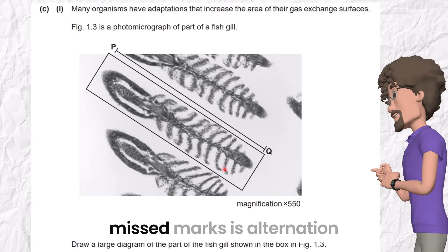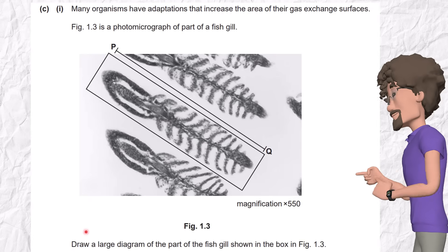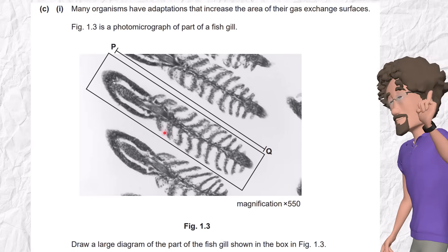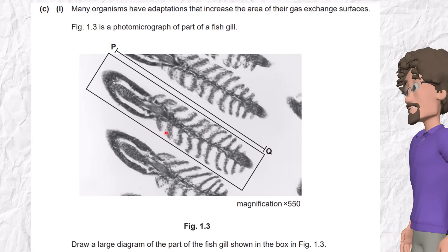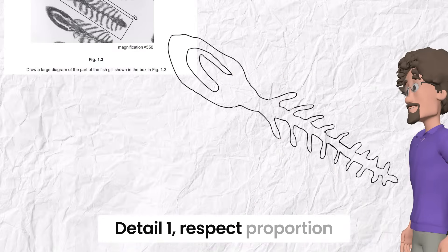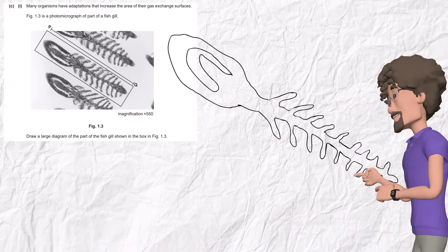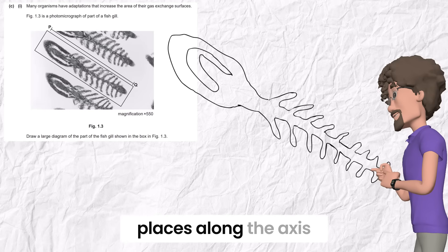One of the most missed marks is alternation of branches. Lamellae do not arise in pairs. They alternate along the axis, left-right, left-right pattern. Not mirrored pairs. So your drawing is same or less like that. Detail 1: Respect proportion and number. Detail 2: Show alternate places along the axis.